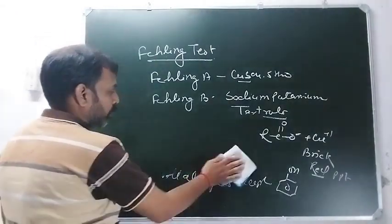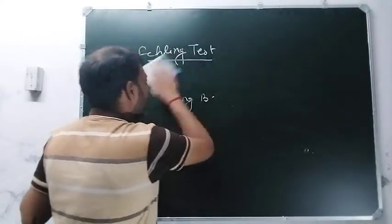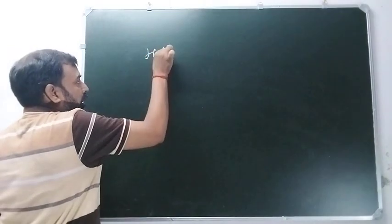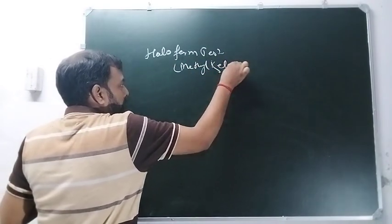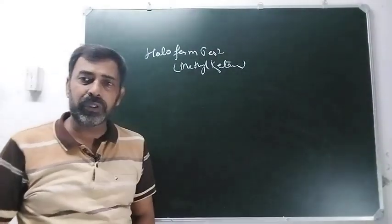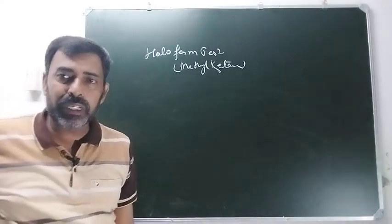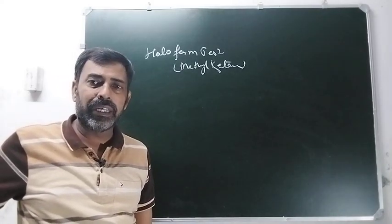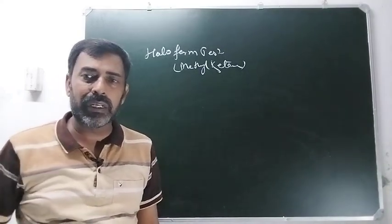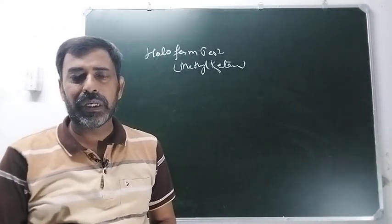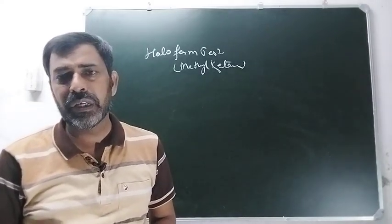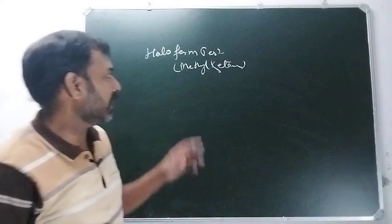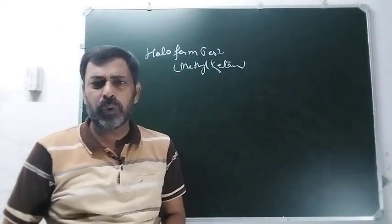The next test is not for the aldehyde only - the test is called Haloform test, generally Iodoform test, and it is for the methyl ketone। यह है आपका Haloform test और यह है for the methyl ketone। इस reaction में बनने वाला by-product haloform होता है इस वजह से haloform test बोला जाता है, लेकिन normally जो हम haloform बनाते हैं वह iodoform होता है इसलिए iodoform test भी बहुत जगहों पर लिखा रहता है। Chloroform और bromoform medical problems create करते हैं, iodoform कम problems create करता है इस वजह से इसी को हम बनाते हैं।